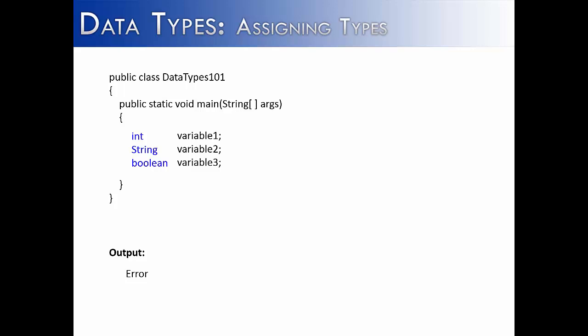And now we have given them int, string, and Boolean. Int is a numeric data type, so we know that variable 1 is going to be some type of number. String would be some kind of word or a sentence or a group of symbols together, and then Boolean would either be true or false. We haven't assigned them any values, but we have given them what type they're going to be in the program. So every time the program calls on variable 1, variable 2, or variable 3, they know exactly what they're getting. They know that they're getting a number, or some words, or true or false.